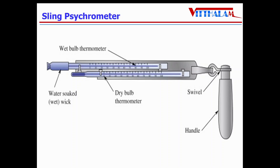When the sling psychrometer is spun rapidly in the air, the water from the wick evaporates and draws heat from the thermometer, which causes the wet bulb thermometer to read lower than the dry bulb thermometer. After the psychrometer has been spun long enough so that the thermometers reach equilibrium temperatures, the device is stopped and the readings are quickly noted. These two thermometers measure the dry bulb temperature and wet bulb temperature of the air.